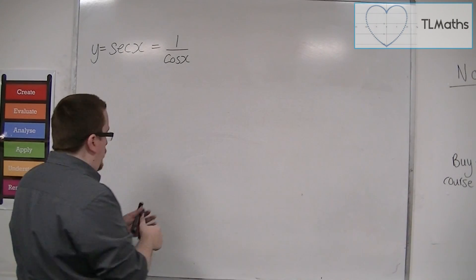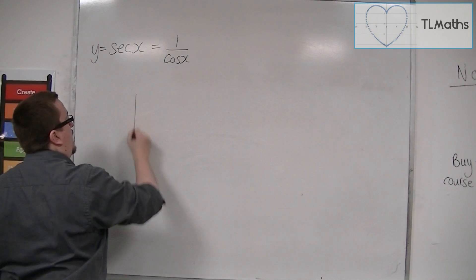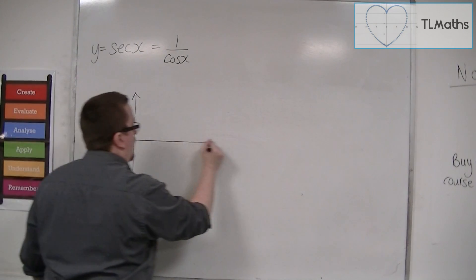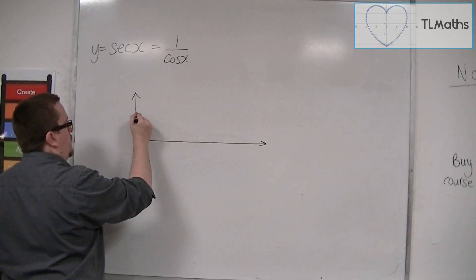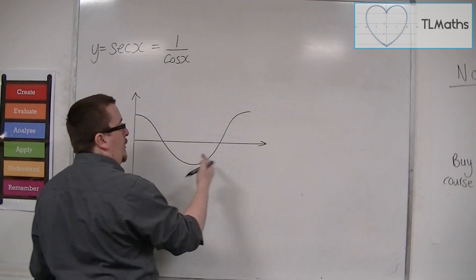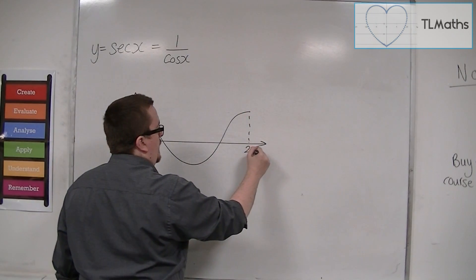So if we sketch cosine first, and once again we're going to go from 0 to 2 pi. So here is cosine.